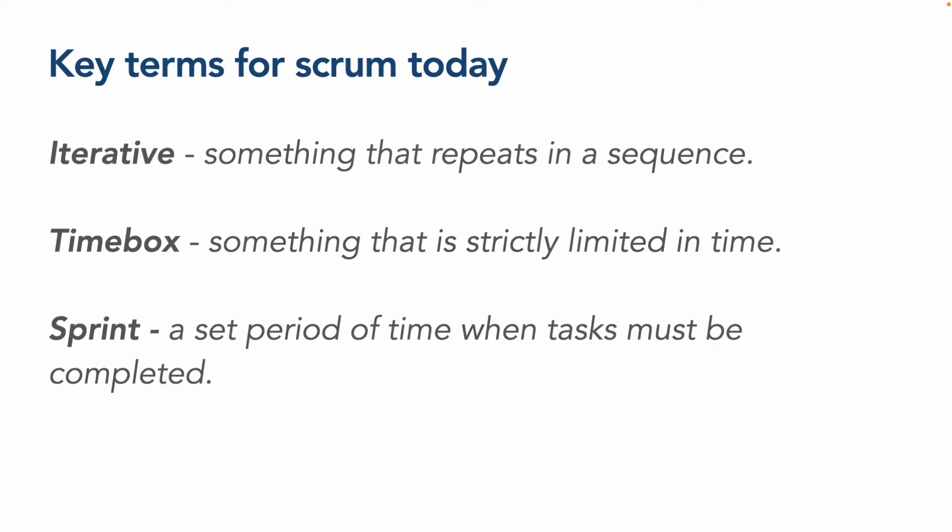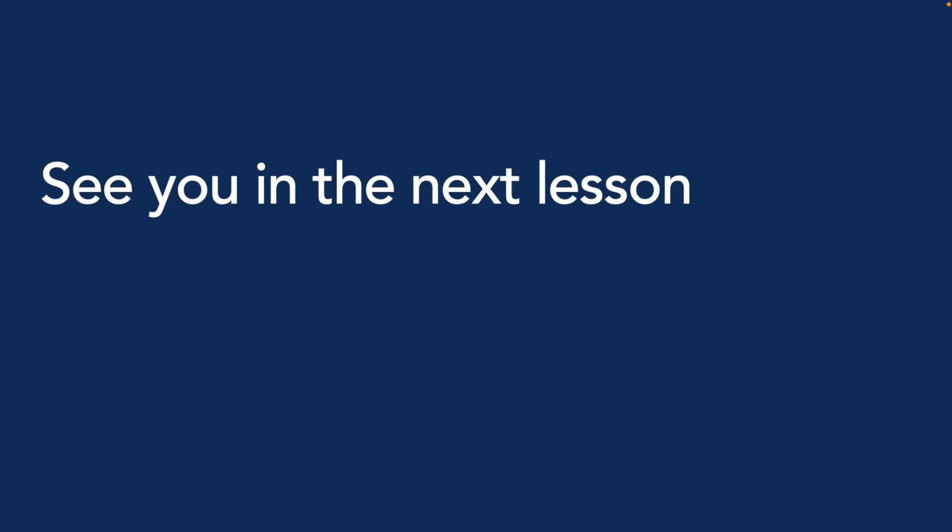The key terms to cement in your mind for this course are: iterative — something that repeats itself in a sequence, as mentioned through the games; time box — something that is strictly limited in time; and sprint — a set period of time when tasks must be completed. That really is, in summary, what agile actually is and how Scrum is strictly defined.